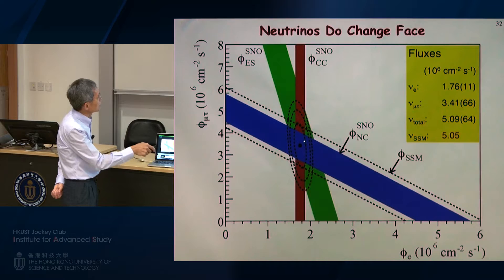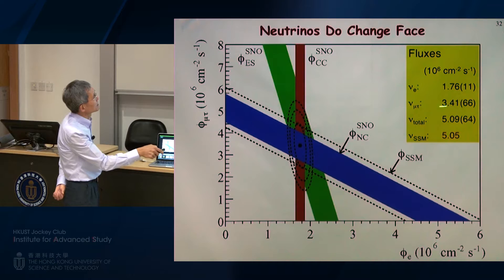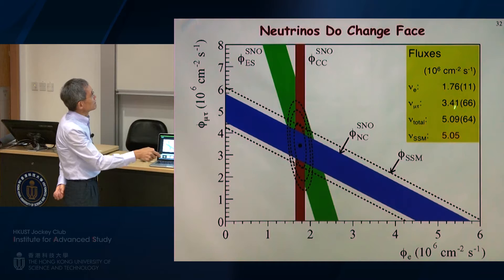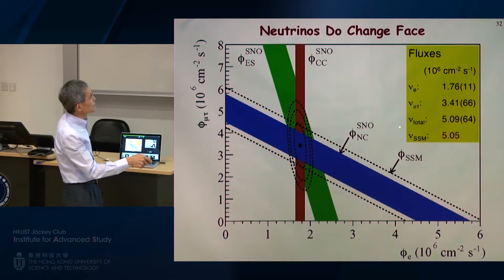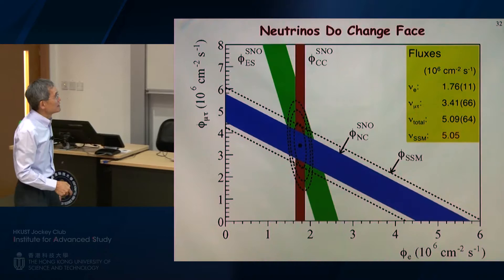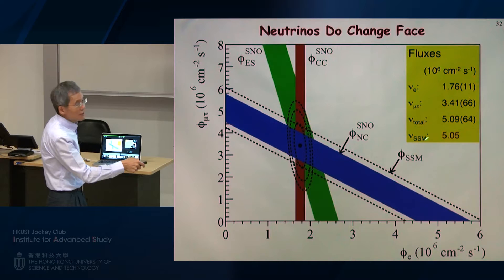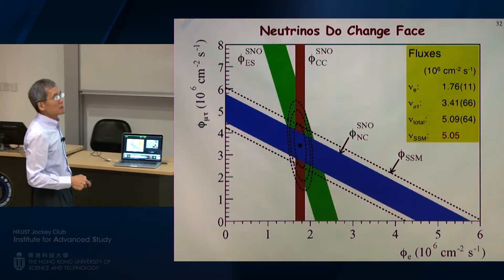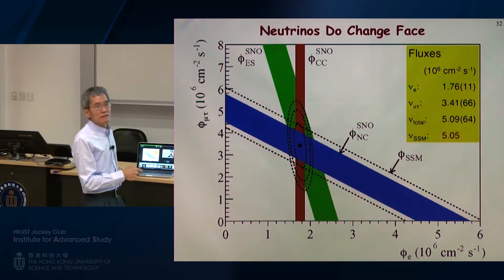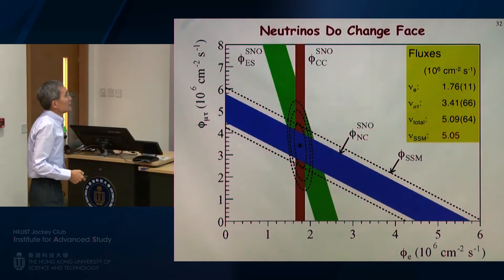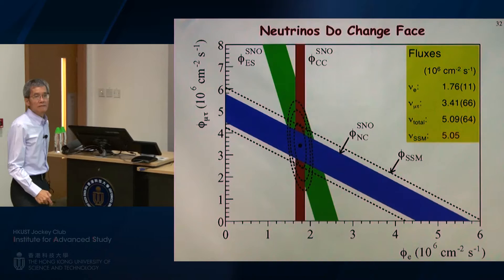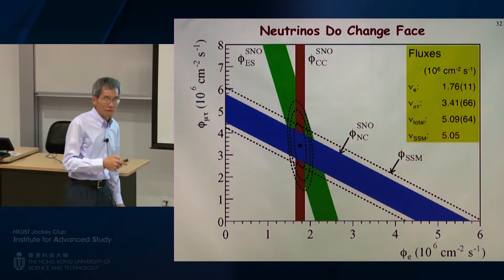That intersection tells us the amount of electron neutrinos and the number of muon and tau types. When you add them all together, you get the total number of neutrinos coming from the sun — about five million per second. The theoretical calculation also gives about five. So we are right on the dot. This experiment essentially proved that there is nothing wrong with our understanding of the sun. What had gone wrong was that we didn't fully understand the neutrino. Because of this conclusive experimental demonstration, the SNO team leader, Professor McDonald, received the Nobel Prize this year. This experiment convincingly showed that we have neutrino oscillation.